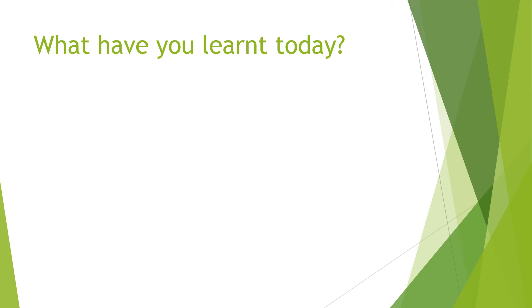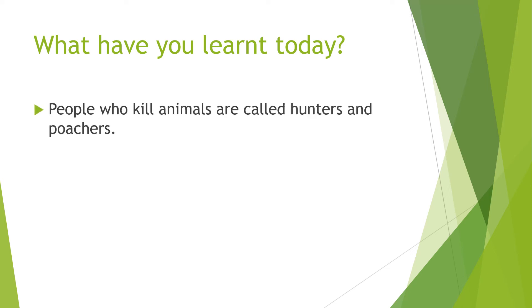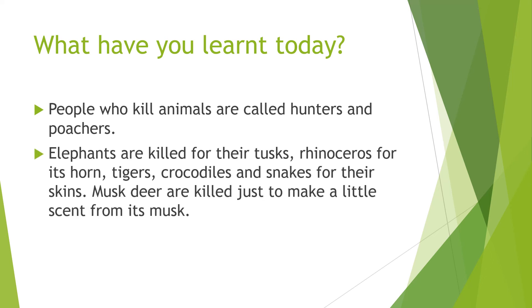So what have you learned today from the six activities? The first point: people who kill animals are called hunters and poachers. Number two: elephants are killed for their tusks, rhinoceros for their horns, tigers, crocodiles and snakes for their skins, and musk deer are killed just to make a little scent from their musk. These are the points we have learned today.